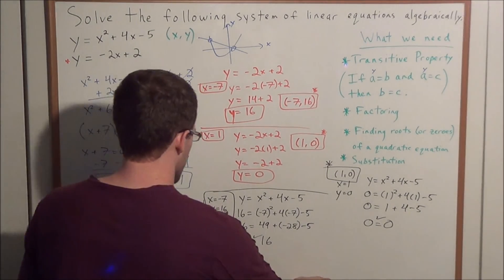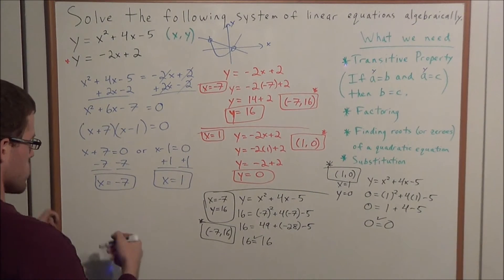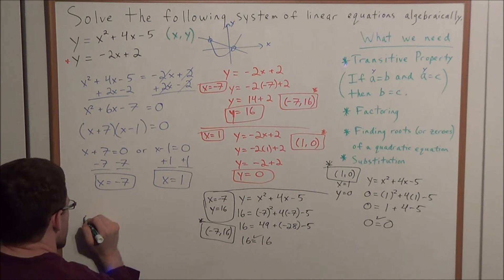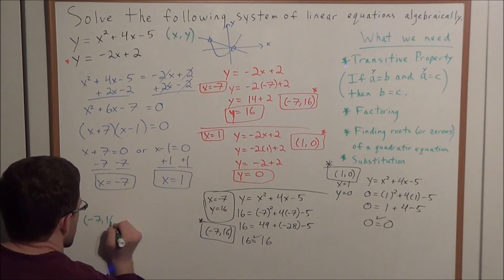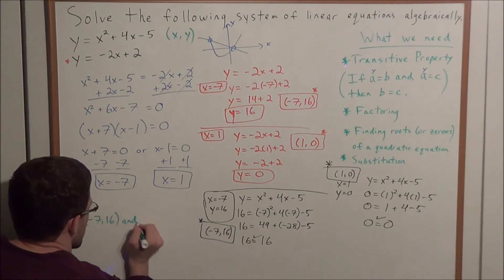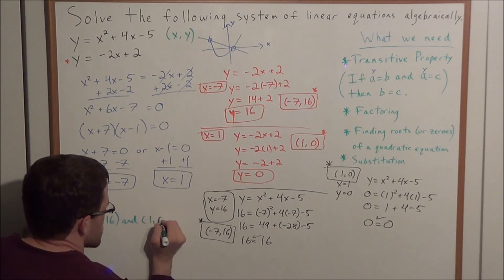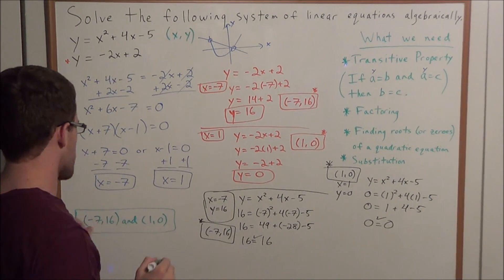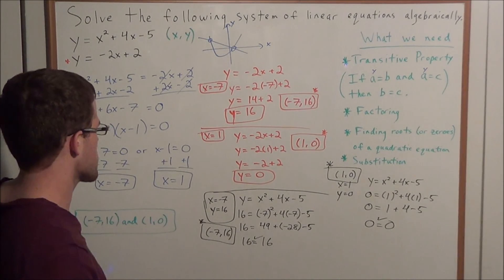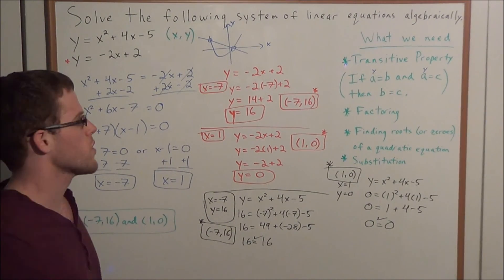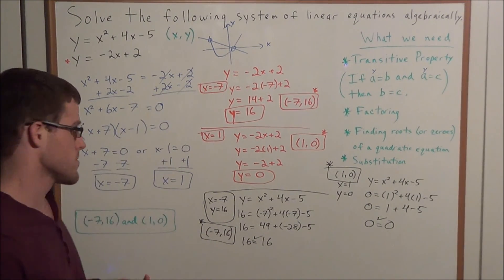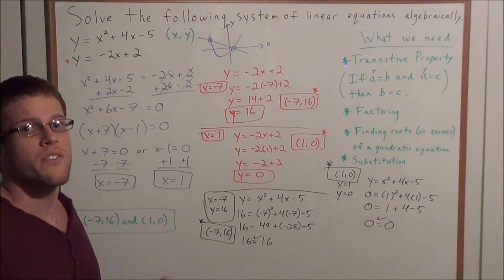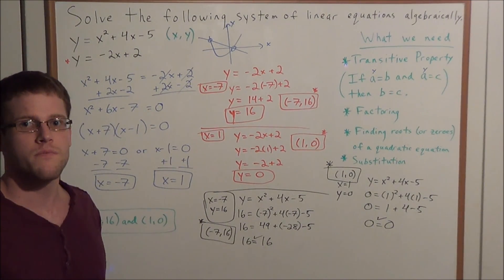To summarize, the solution to this system is the points negative 7, 16 and 1, 0. This is how we solve a system of quadratic linear equations algebraically. That concludes this problem and this video — thank you all for watching and I hope it was helpful.